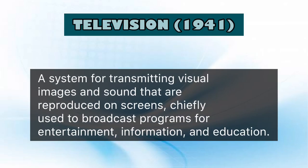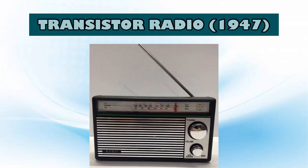We also have the television. Next, we have the transistor radio — a small portable radio receiver that uses transistor-based circuitry. Following its development in 1954, made possible by the invention of the transistor in 1947, it became the most popular electronic communication device in history.